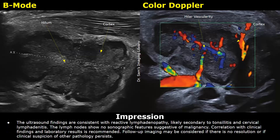The impression: the ultrasound findings are consistent with reactive lymphadenopathy, likely secondary to tonsillitis and cervical lymphadenitis. The lymph nodes show no sonographic features suggestive of malignancy. Correlation with clinical findings and laboratory results is recommended. Follow-up imaging may be considered if there is no resolution or if clinical suspicion of other pathology persists.